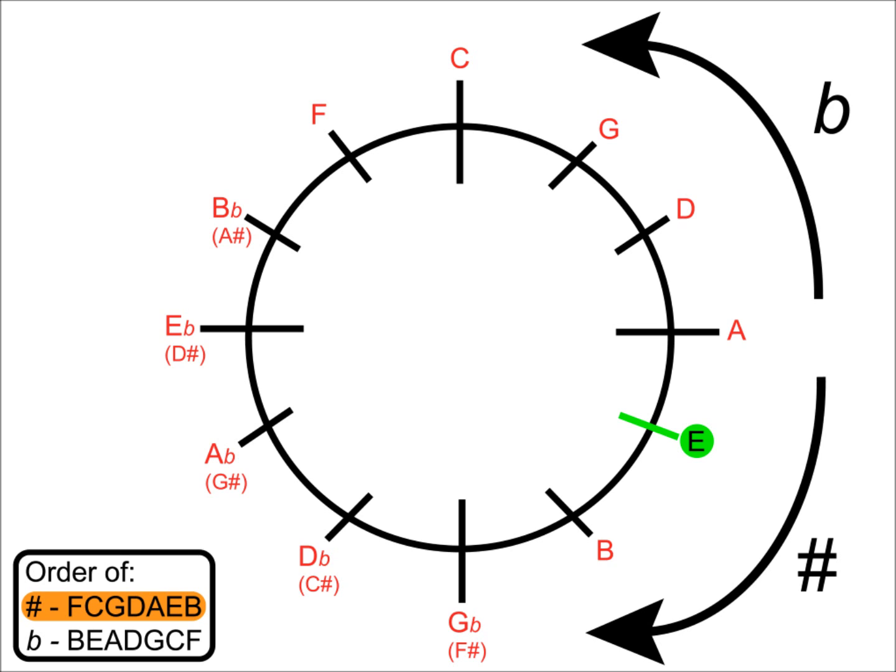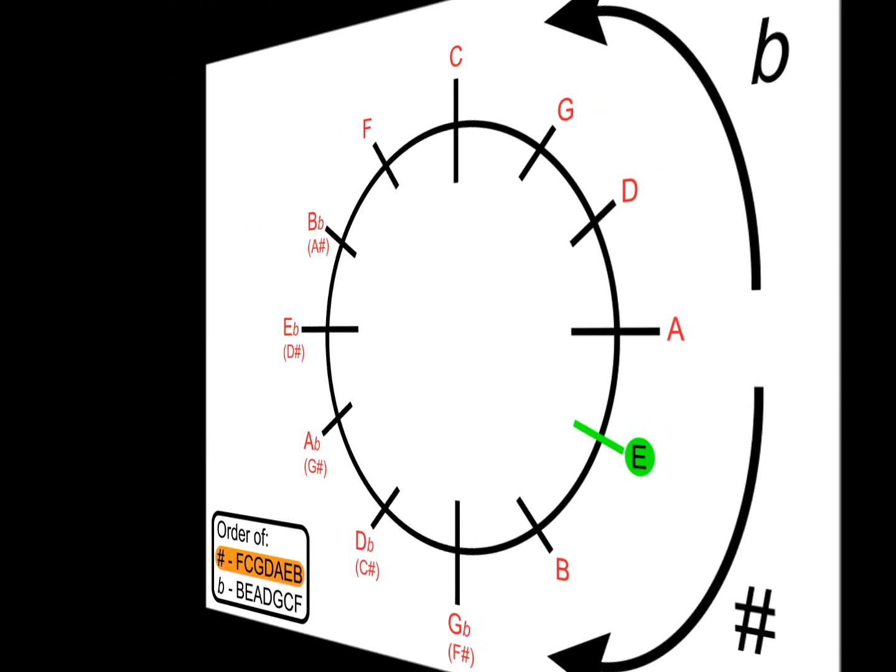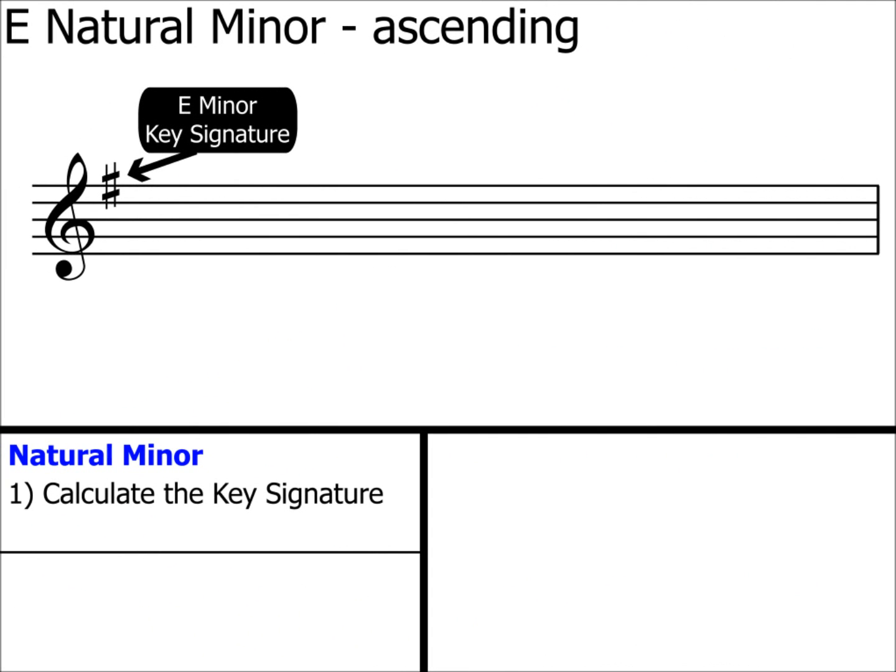we know that E minor has a key signature with one sharp. Over in the bottom left-hand corner is our order of sharps. We take just the first letter from this order. Only one letter because we've calculated our key signature to have just one sharp in it. It's an F, so our key signature for E minor will have an F sharp in it. Let's pop that key signature onto a stave. Step 1 is now complete.